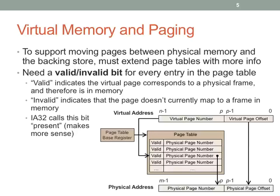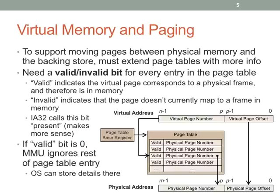Different operating systems have different ways of breaking that down. Linux actually has two ways of doing it now — it used to only have a swap partition, but now it can do a swap file as well. Windows, for a long time, has just done a swap file. So we have some way to encode where the page's data is if it's not in memory, and that's the useful thing we can do with the page table.